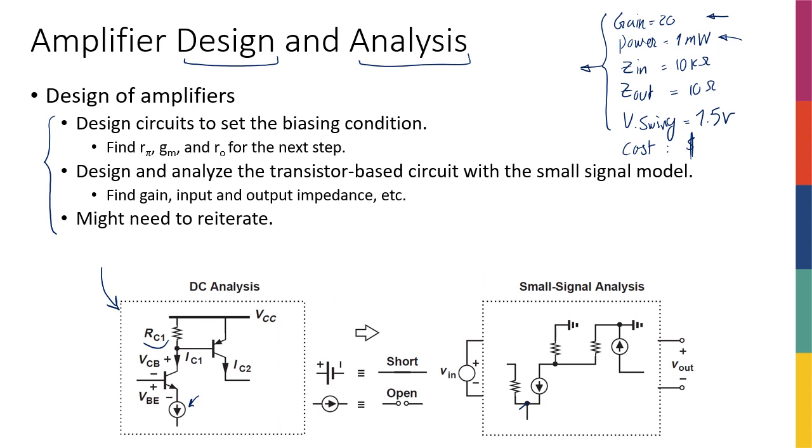And then because some of these specs such as power consumption are related to DC analysis or DC operation of the transistor, and some other ones such as the gain, the input impedance, the output impedance, the voltage swing. Well, no, the voltage swing is DC. So the green ones are actually AC analysis kind of parameters and the red ones are DC analysis. So you do the DC analysis, you meet some of the requirements.